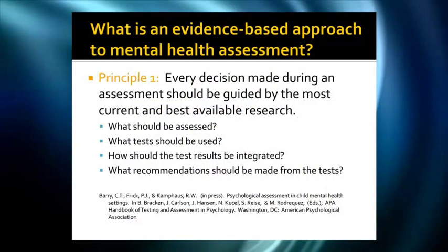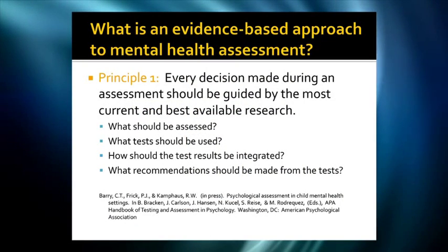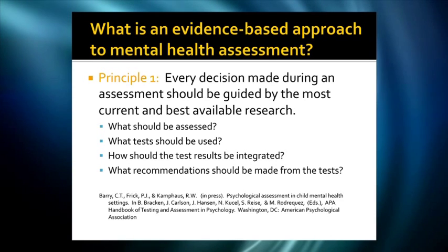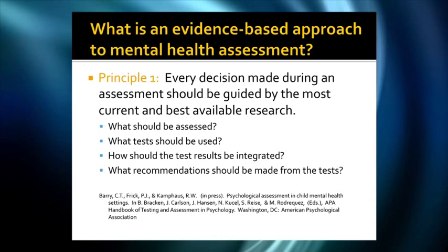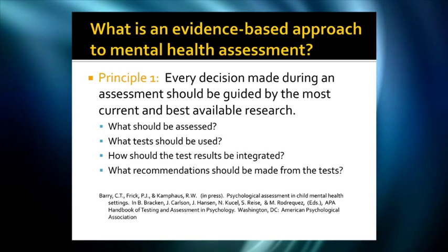We were asked to do a chapter for the APA Handbook on Testing and Assessment, and what we tried to do was take that broad definition and come up with three principles that underlie this approach. The first principle follows directly from Mash and Hunsley's definition: everything you do when assessing a child should be guided by the most current and best available research.